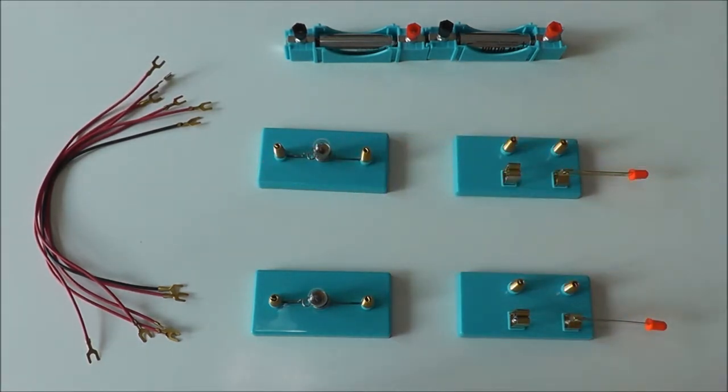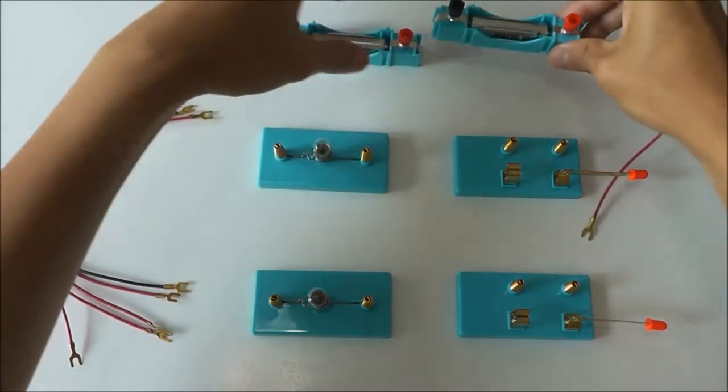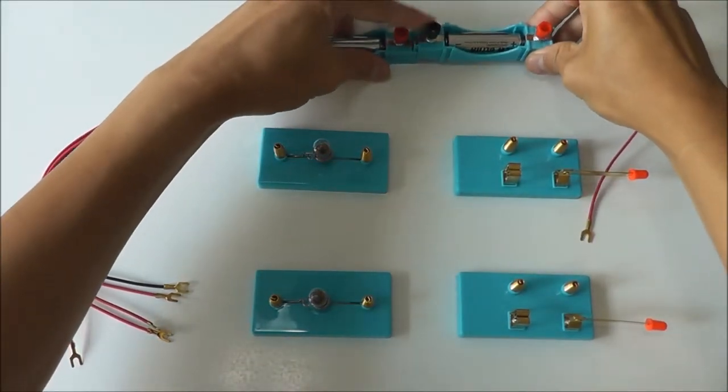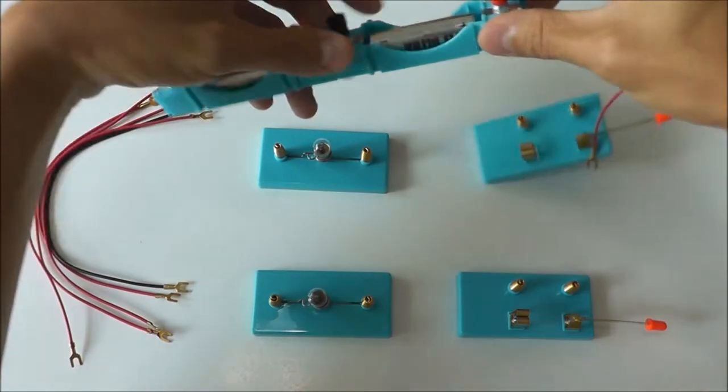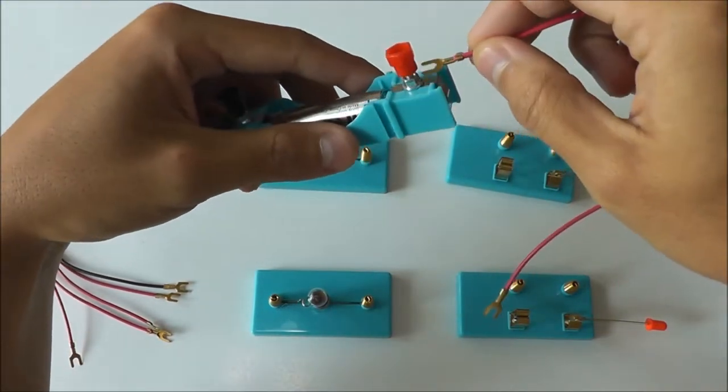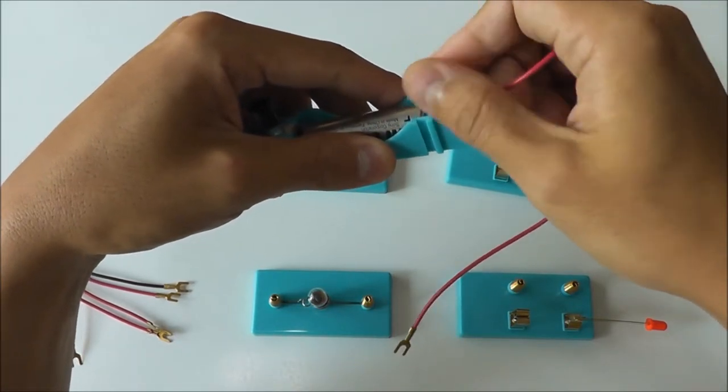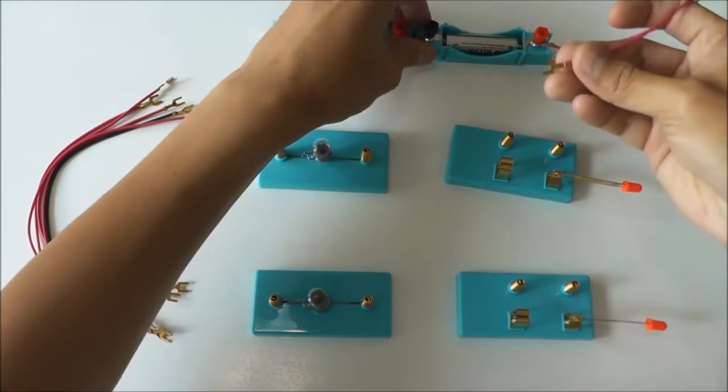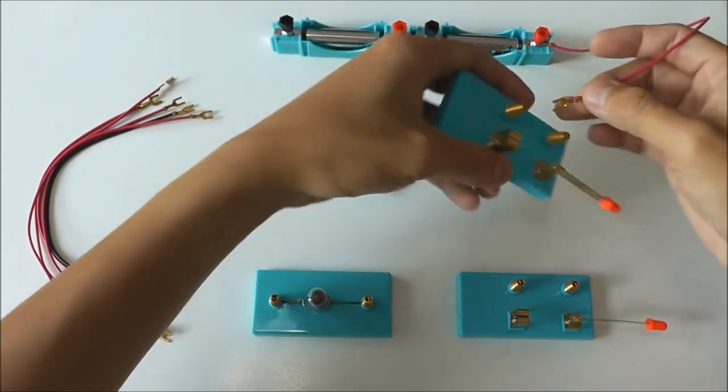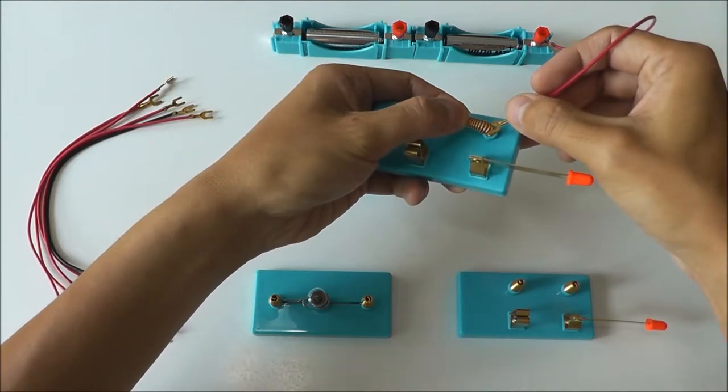Let's start from the red knob of the battery. I'll connect the wire by slotting it in and tightening the red knob. This part of the wire goes to the connection point here. We bend the spring, slot it in, and release.